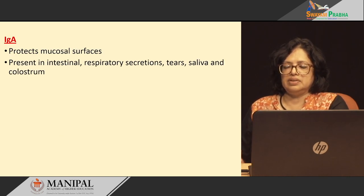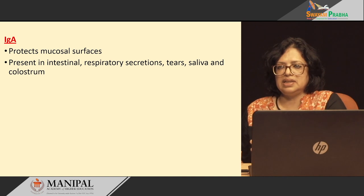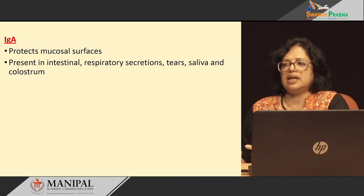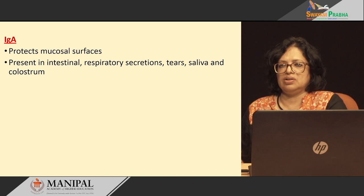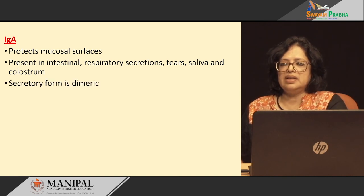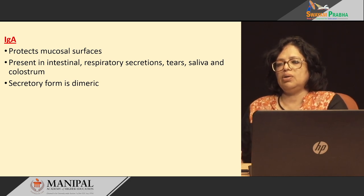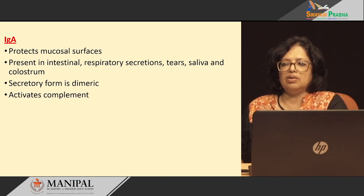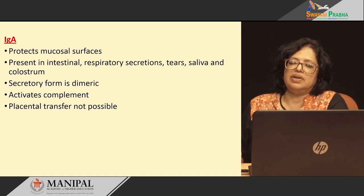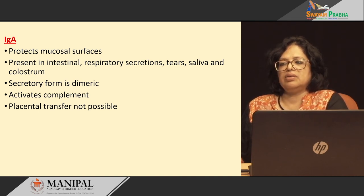IgA protects the mucosal surfaces. Wherever there are mucosal membranes and secretions, there is IgA present — for example, in intestinal secretions, respiratory secretions, in the tears, in the saliva, and in the colostrum, where it is highest in concentration. The secretory form of IgA is dimeric, meaning two immunoglobulin molecules are attached to each other, while what is in the blood is monomeric. It can also activate complement, but placental transfer is not possible — IgG is the only one which can be transferred across the placenta.